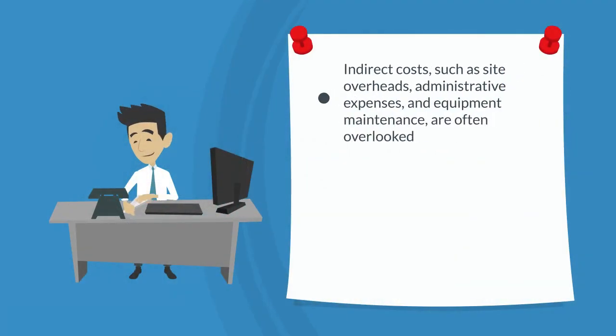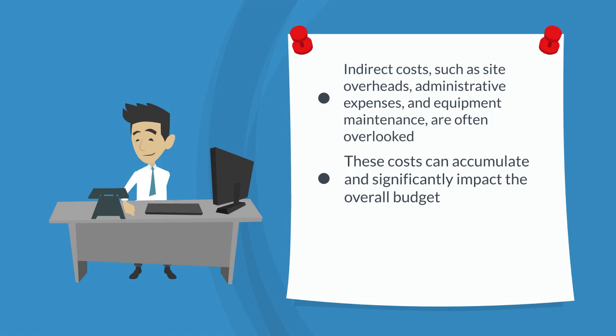Indirect costs such as site overheads, administrative expenses and equipment maintenance are often overlooked. These costs can accumulate and significantly impact the overall budget.